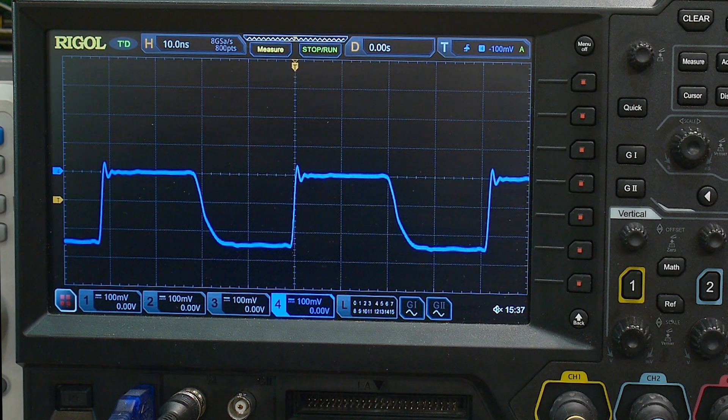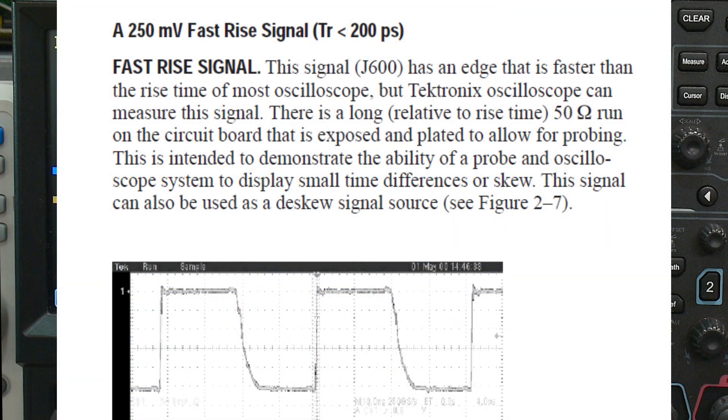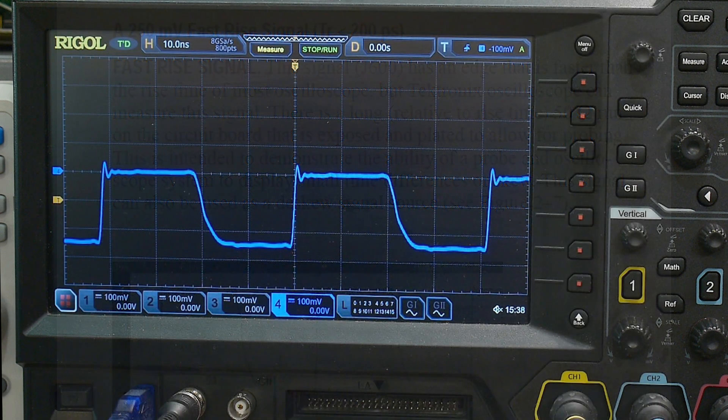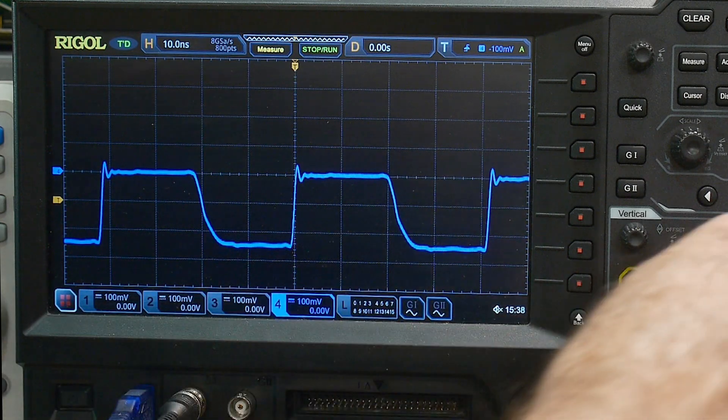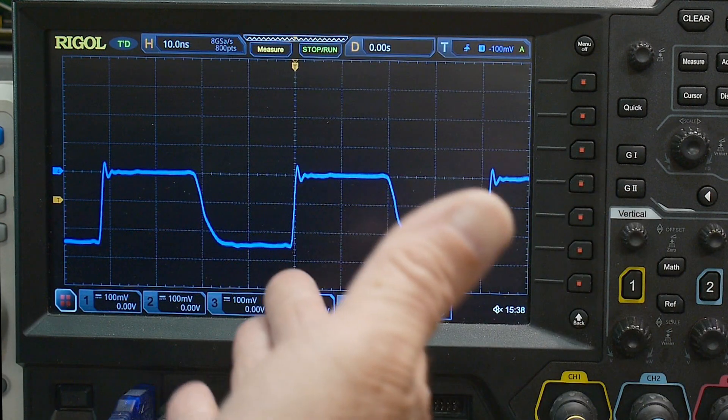The instruction manual says that the rise time is less than 200 picoseconds, so kind of curious how they generate that. We'll take a look at the schematic. But let's see if it really is that fast. We're going to be limited by the bandwidth of the oscilloscope. This is a 350 megahertz oscilloscope.